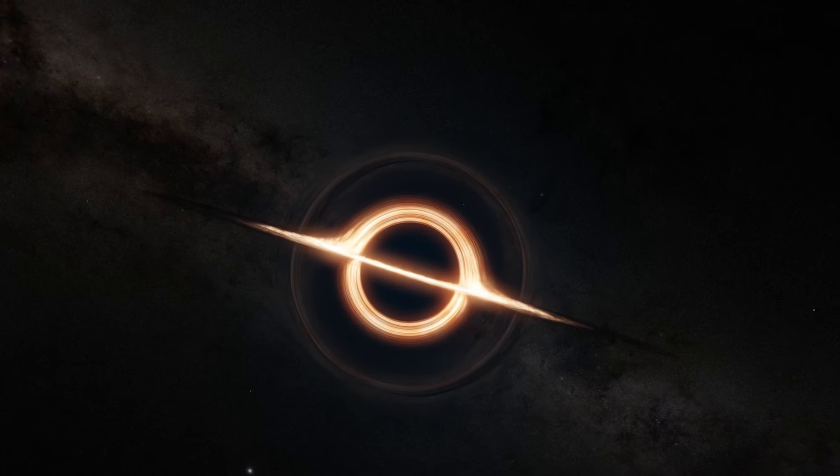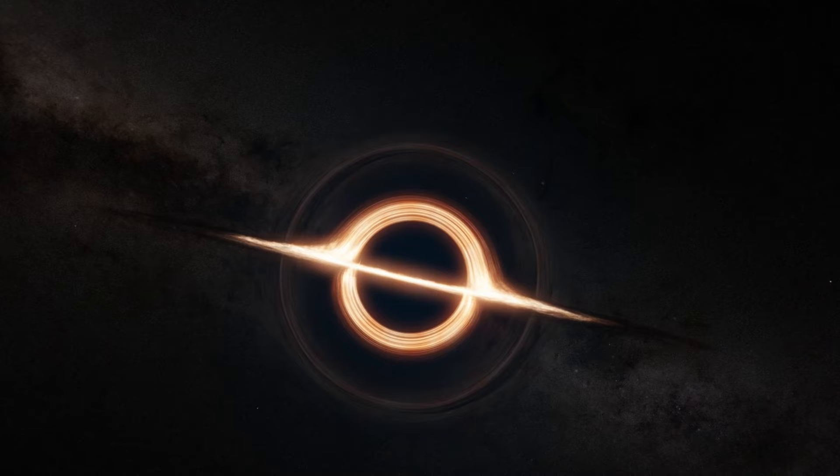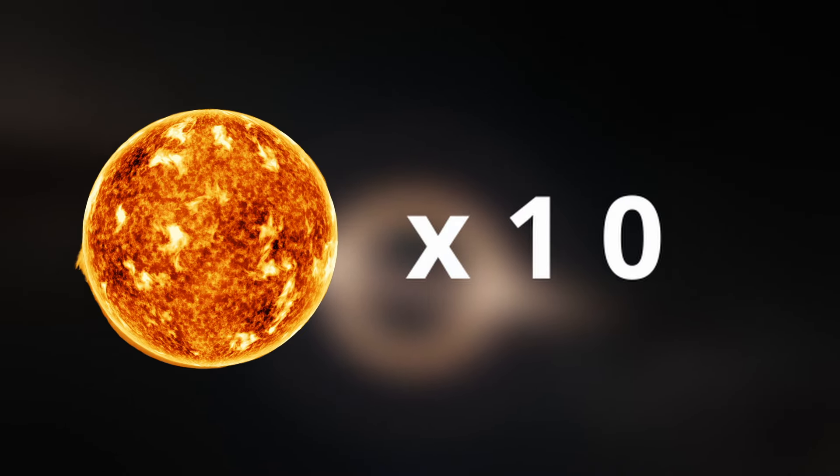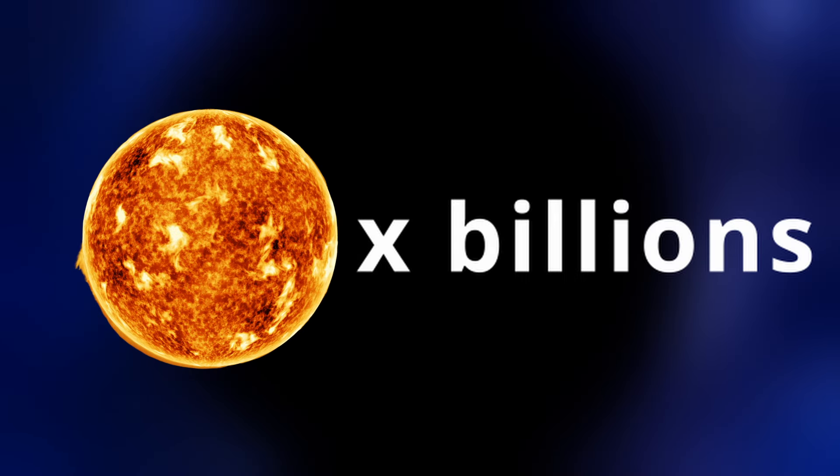Stellar black holes are the smallest, which are typically about 10 times the mass of the Sun. Supermassive black holes are absolutely massive, which can have masses equivalent to billions of suns.